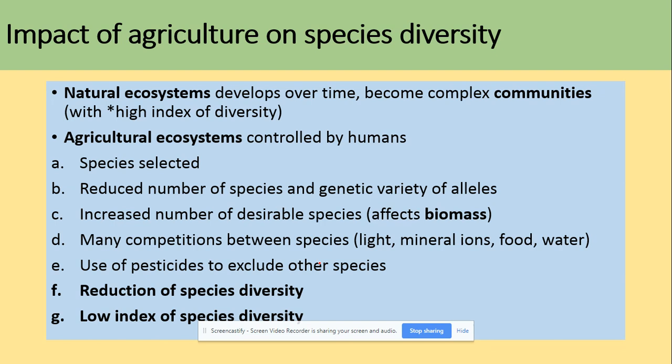The agricultural ecosystems are controlled by humans. So what does that actually mean? That means that the species are selected, they reduce number of species and genetic variety of alleles. They increase the number of the species that they would like to get to affect the biomass, to increase the biomass. There are many competitions between the species - could be competition for light, mineral ions, food, water. And they use pesticides to exclude other species. So what we can deal here with is a reduction of species diversity and the low index of species diversity as the impact.